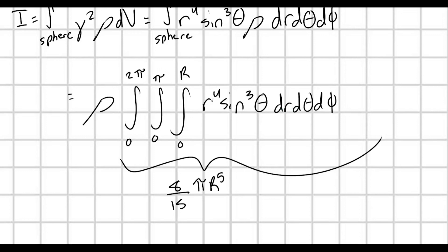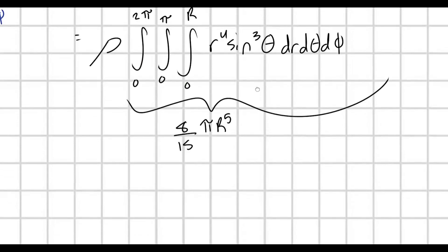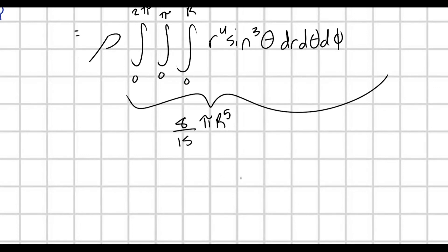Because integrating with respect to r is very easy. That's just going to turn this into one-fifth r to the fifth sine cubed theta. We plug in our boundaries, and we have no dependence on phi, so that just ends up giving us a factor of two pi once we end up doing this. So it's really not that bad of an integral, but, yeah, this will be the end result from that. And so when we plug in rho, rho is going to be equal to my total mass, as I said before, over four-thirds pi r cubed.